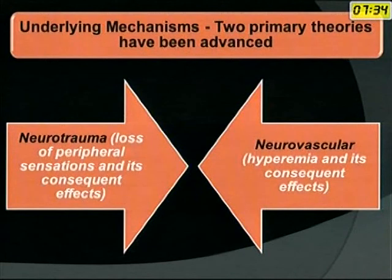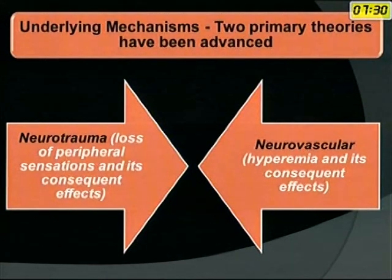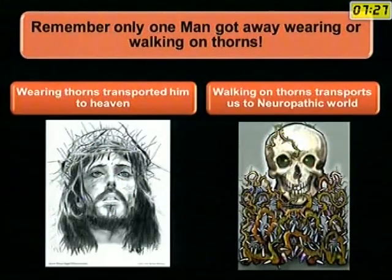Underlying mechanisms: neurotrauma — loss of peripheral sensation and its consequent effects; and neurovascular — hyperemia and its consequent effects.